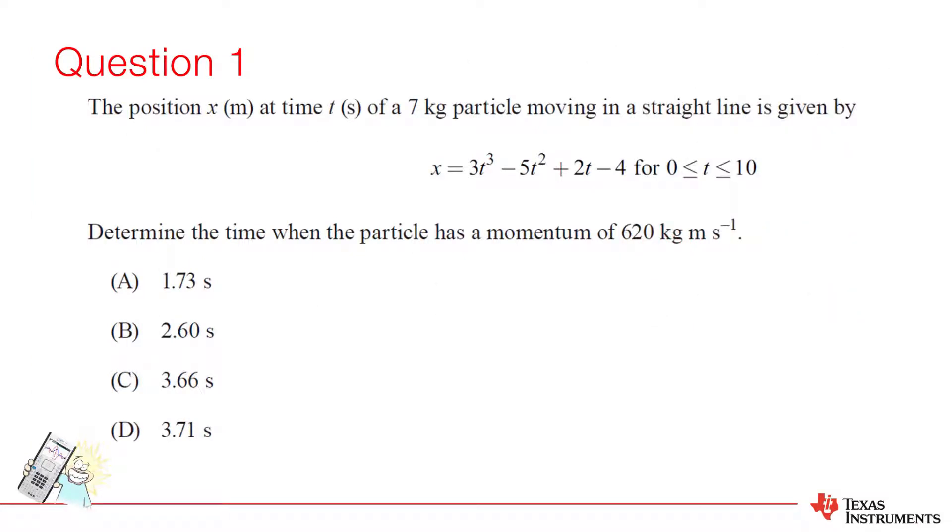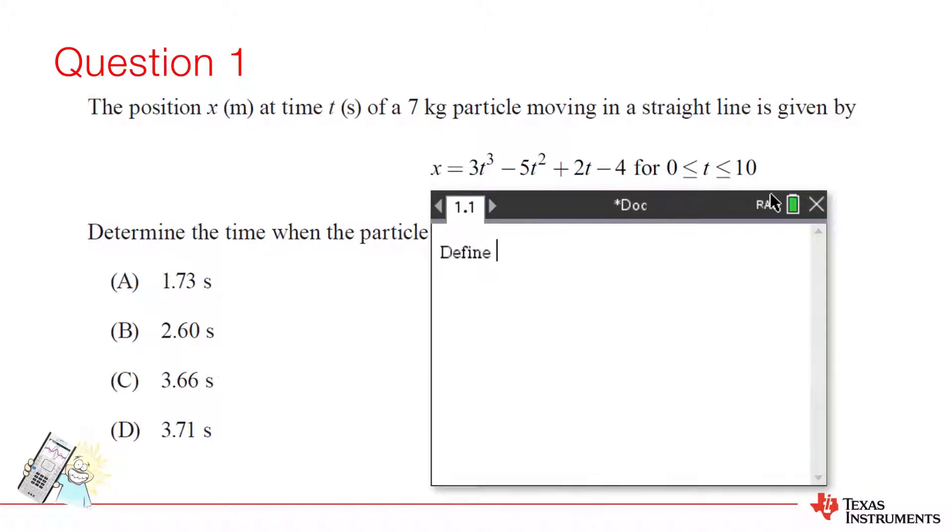This question is asking about momentum. Momentum is given by mass times velocity. We're given information about the mass and position, so we need to determine an equation for the velocity. The rate of change of position will give us the velocity. In other words, we need to find when 7 times the derivative of the position function is equal to 620.